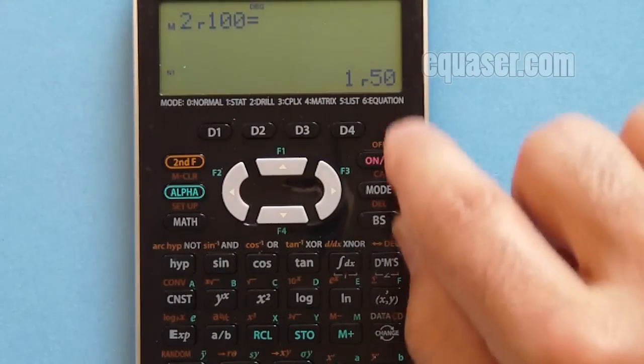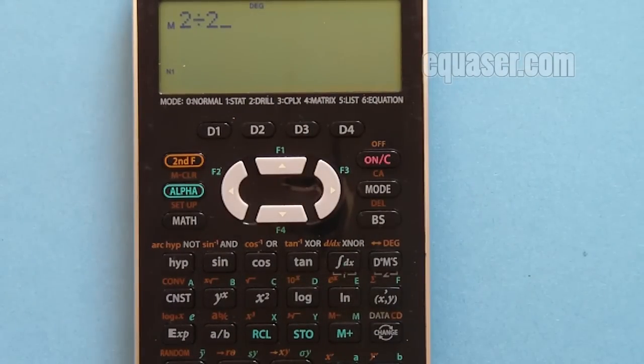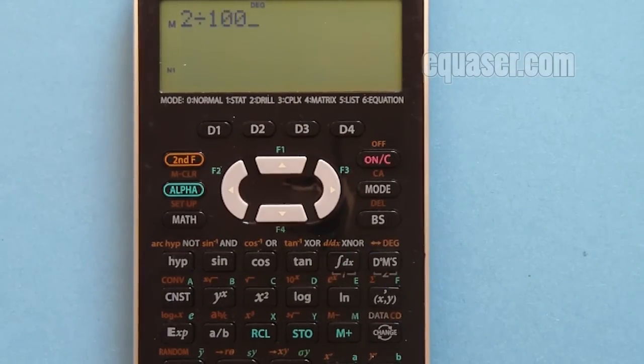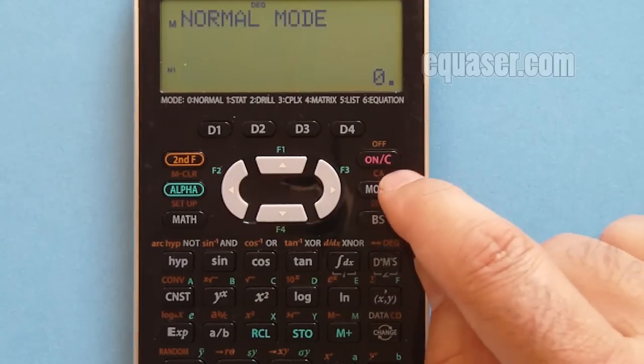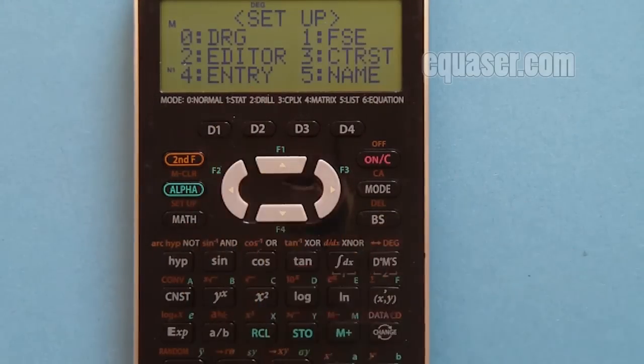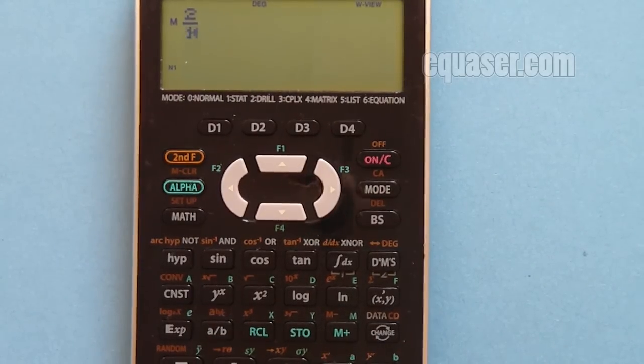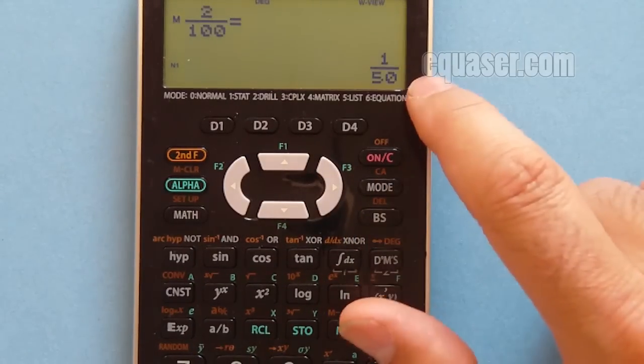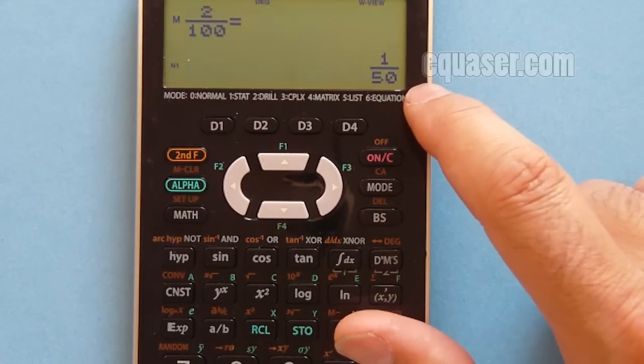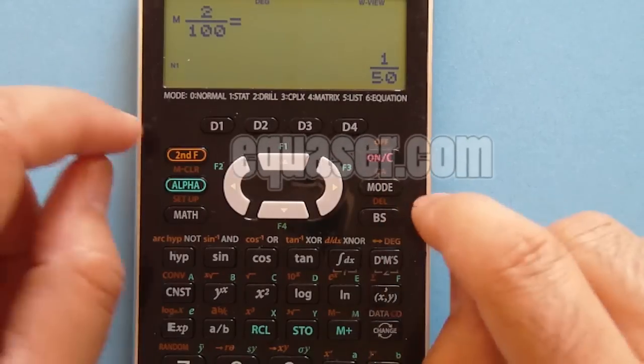So if I press second function, setup, editor, 0, now I can put 2 divided by 100, but it shows it as a fraction. I hope you enjoyed the tutorial.